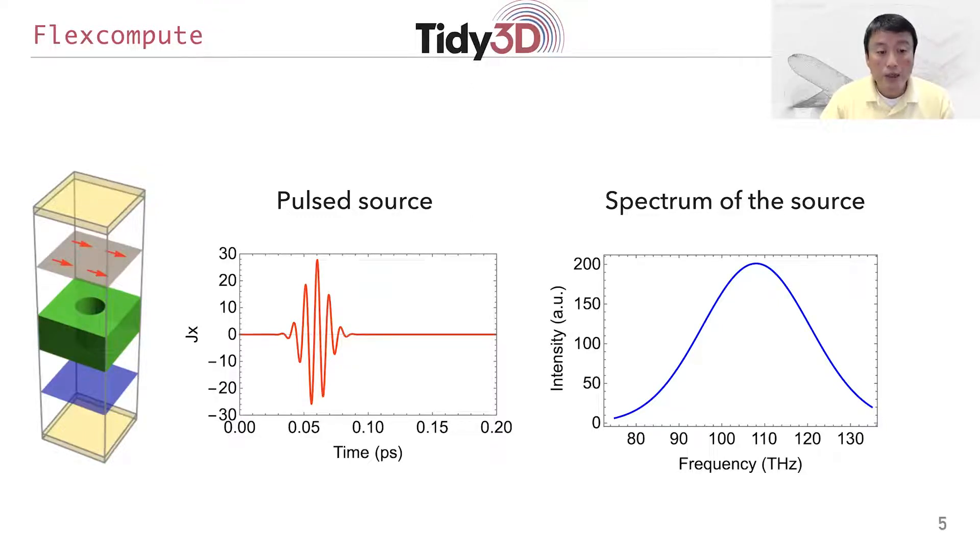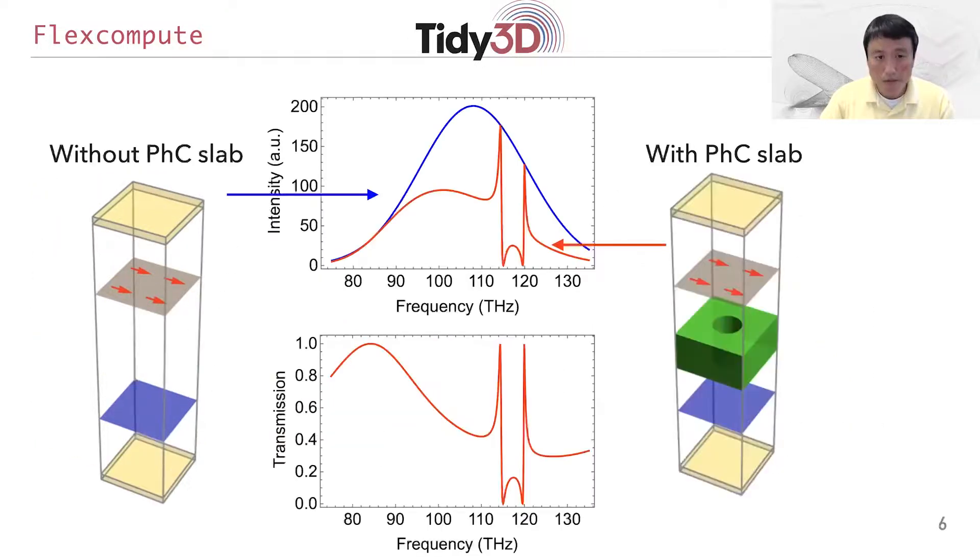So with this, we can put in a source. The source here is a plane wave source with a Gaussian envelope. We choose, in this case, a relatively short pulse so that we can produce a broadband spectrum covering the frequency range from 80 to approximately 130 terahertz.